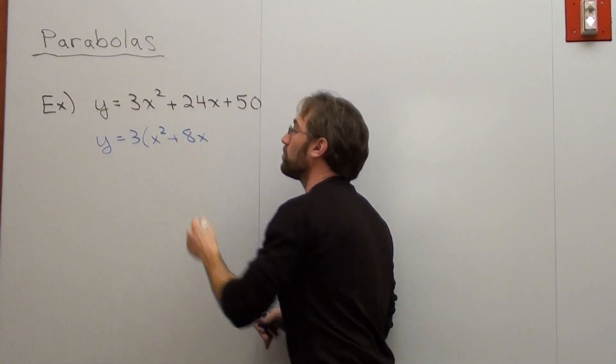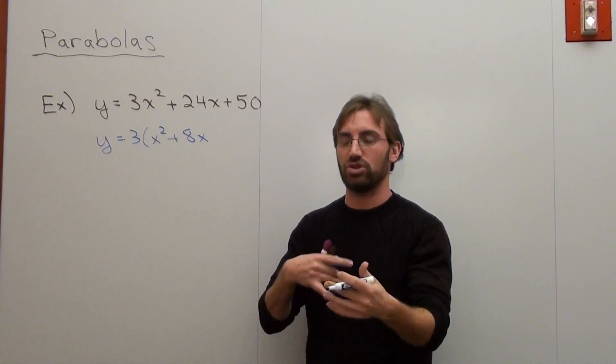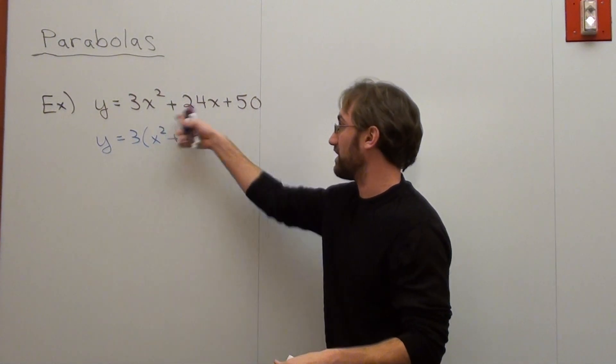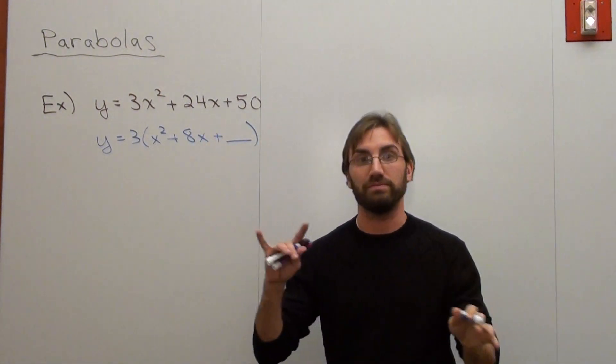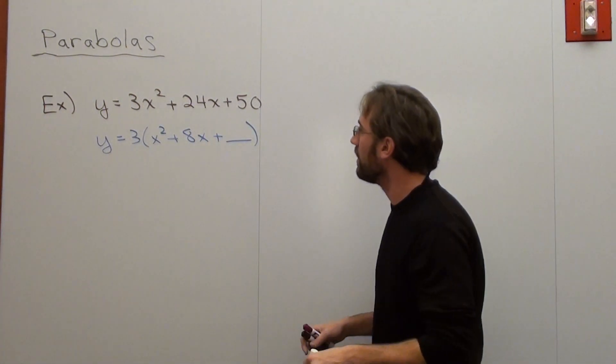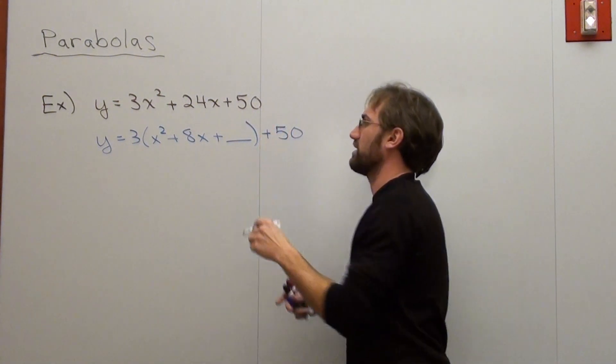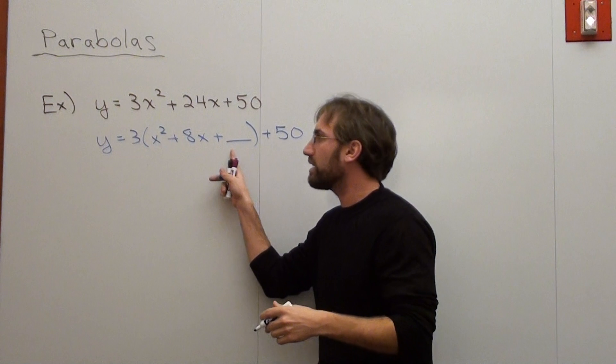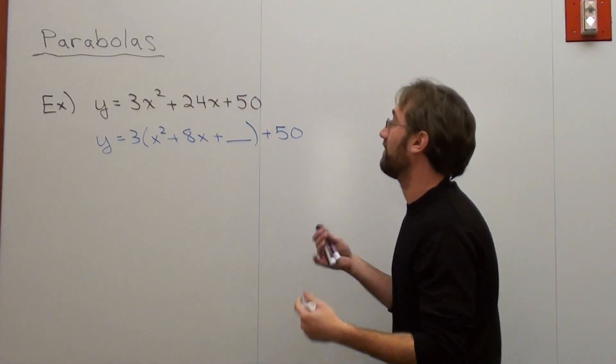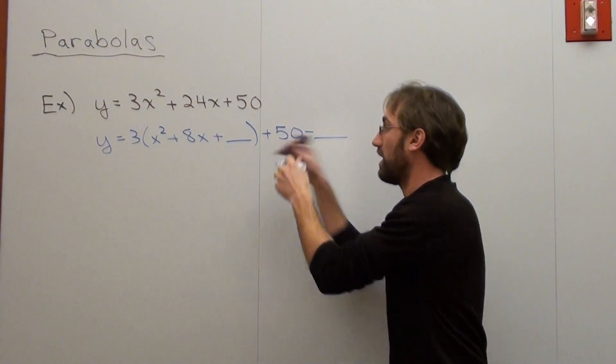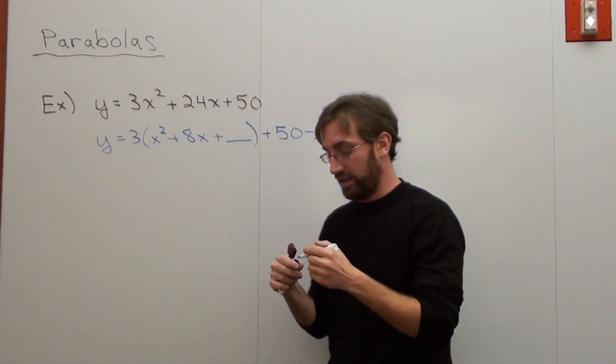Now I'm going to use completing the square in order to put it in vertex form. Because that's what you always have to do if you want to put it in vertex form. If it's in this form right here, standard form. And that's going to be plus some mystical, magical number. And then I've got plus 50, and here's something to consider. If I'm adding a number to an equation, it's going to offset the equation. So what I have to do is I have to subtract that same number on the same side in order to put it back in place, put it back in balance.